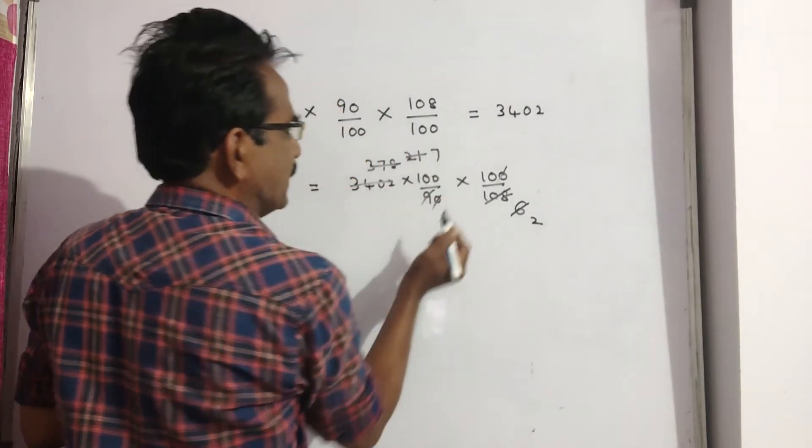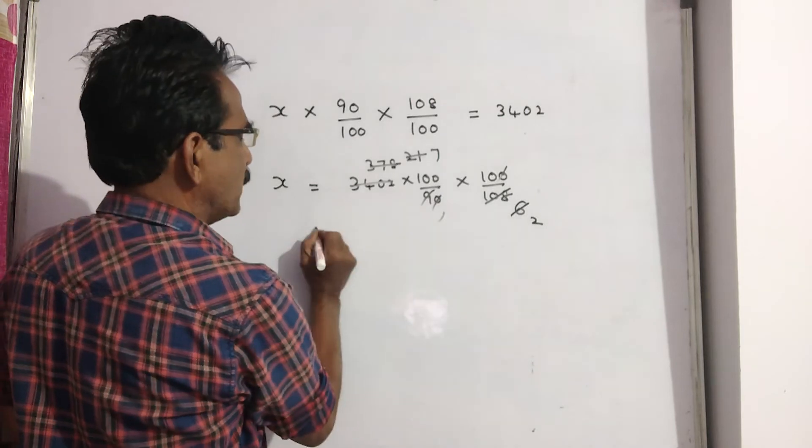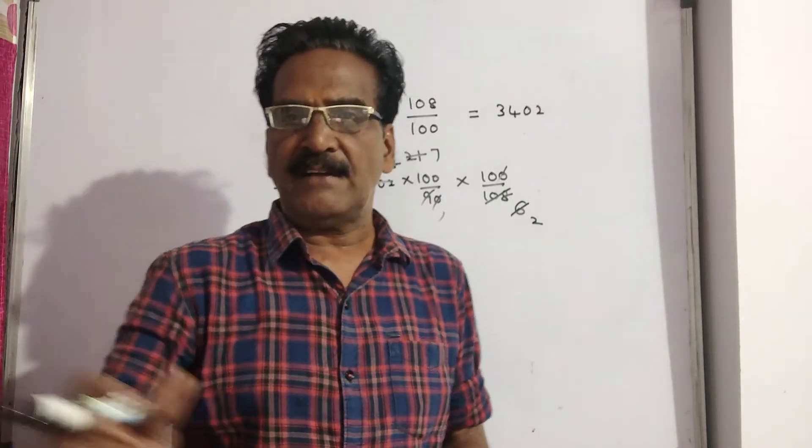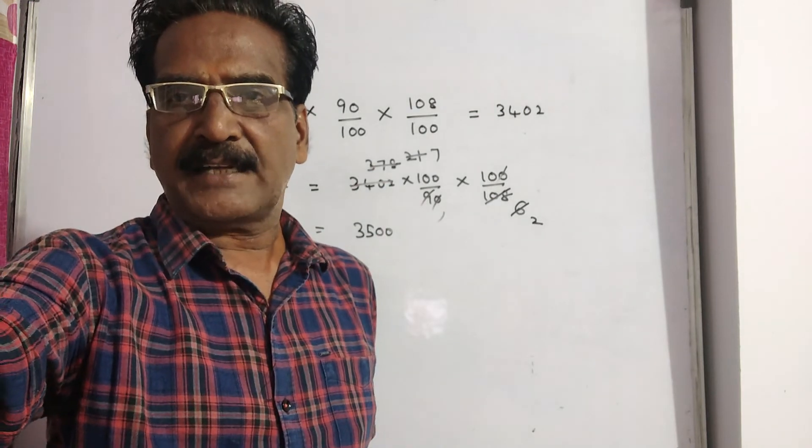7000 by 2 means 3500. 3500 is the marked price of the article, friends.